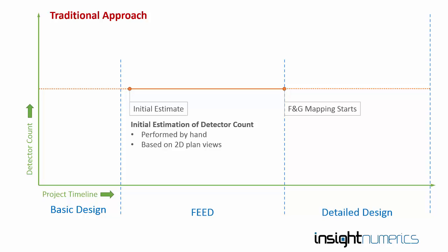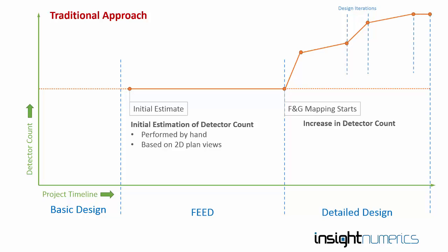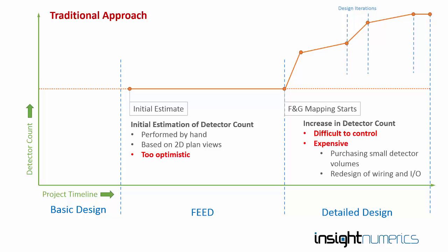This discrepancy inevitably leads to an increase in Detector Count soon after the fire and gas mapping has started. Our EPC customers tell us that over the past few years, this increase has continued as each design iteration results in an increased Detector Count. The problem here is two-fold. First, the initial estimate is too optimistic because it's based on very simple techniques. Second, EPC companies have traditionally had to submit to black box results produced by the in-house software of fire and gas mapping consultancies, and therefore have had little control over the rising detector counts and associated costs. These two problems are very common, and I hear them very consistently.